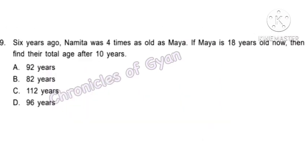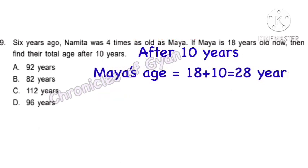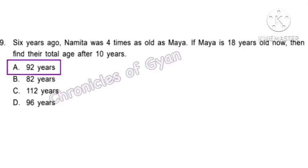Question 9. Six years ago, Namita was 4 times as old as Maya. If Maya is 18 years old now, find their total age after 10 years. Maya's age 6 years back was 18 minus 6 equals 12. Namita's age 6 years back was 4 times 12 equals 48. Namita's present age is 48 plus 6 equals 54. After 10 years, Maya's age is 28 and Namita's is 64. Their total is option A — 92 years.